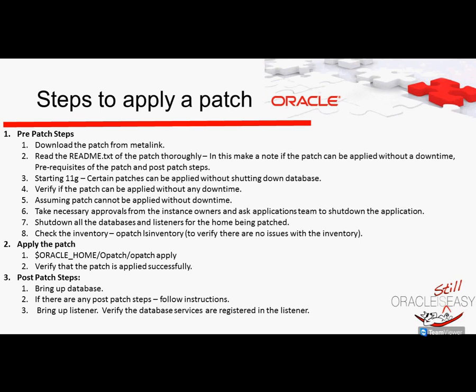Verify from the readme if the patch can be applied without any downtime. Assuming that the patch cannot be applied without a downtime, take necessary approvals from the instance owners and ask the application team to shut down the application. Once the application is down, we need to shut down all the databases and listeners for the Oracle home that is being patched. Next, check the inventory to verify there are no issues and to see what patches are already applied on this particular home. Then apply the patch using the opatch tool by changing to the location where you unzipped the patch.